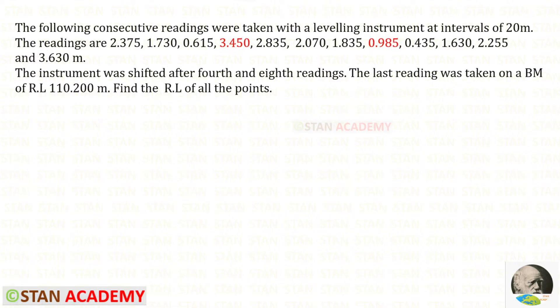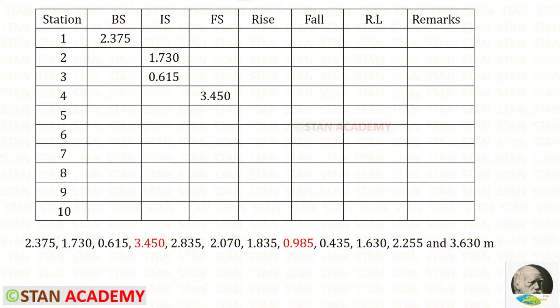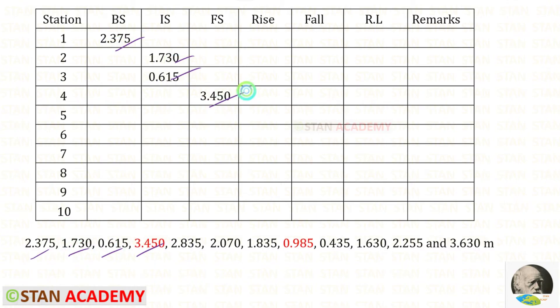In the previous problems, the first reading was taken on the benchmark, but here the last reading was taken on the benchmark. This problem will also be very easy if we use the rise and fall method. We know that the first reading should be the backsight and this is the foresight, so these two readings should be the intermediate sights. Let us enter the backsight, then the intermediate sights, and then the foresight.